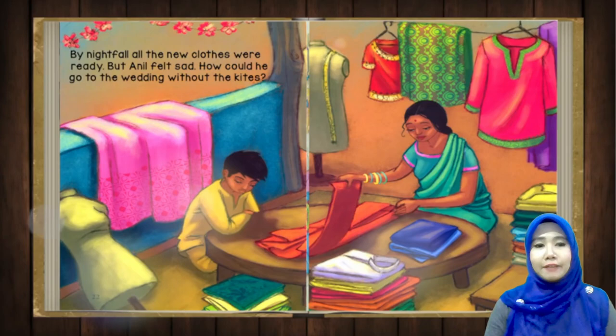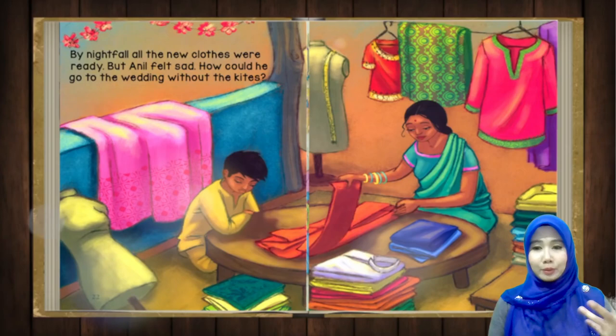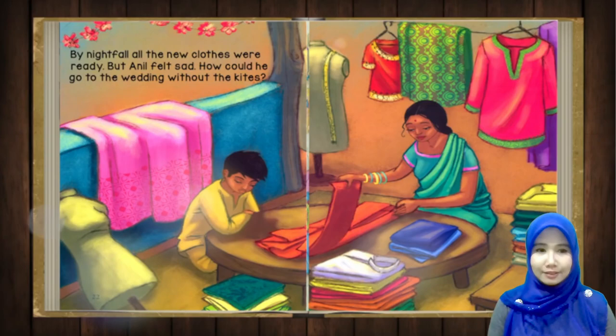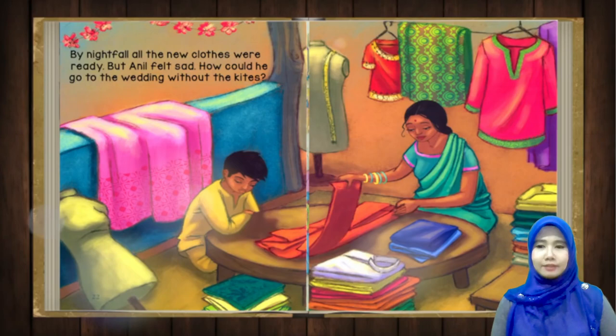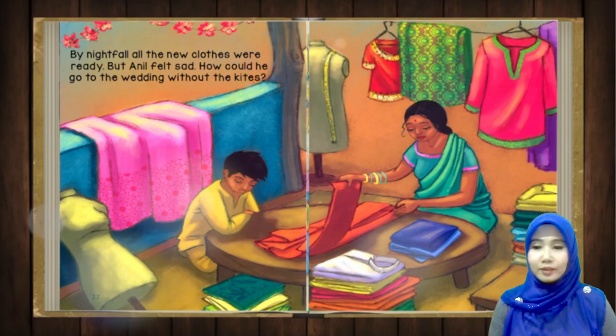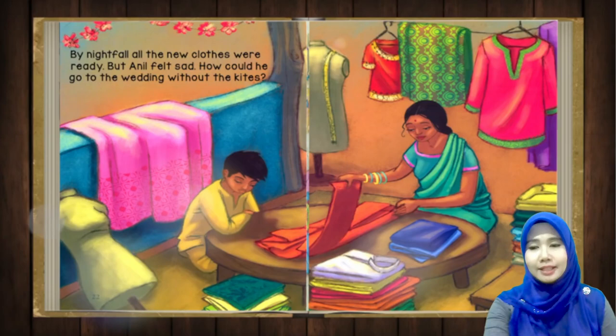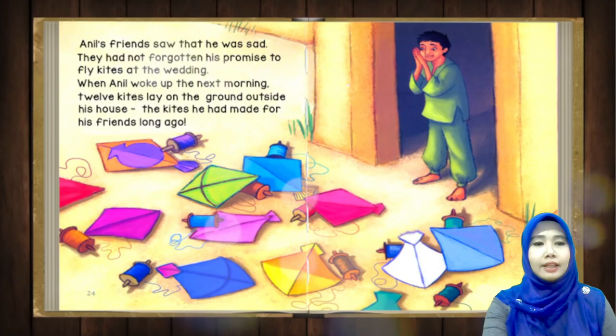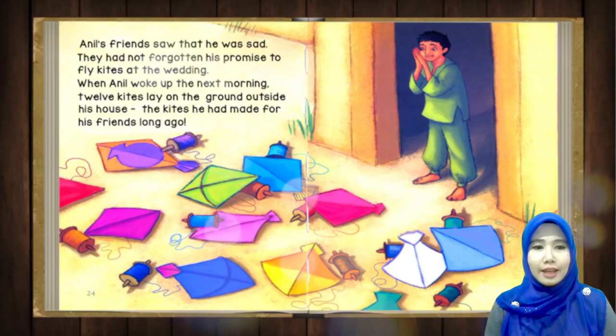By nightfall, all the new clothes were ready — pada waktu malam semua baju-baju baru tu dah sedia. But Anul felt sad — tapi Anul still sangat sedih. How could he go to the wedding without the kites? Macam mana dia nak pergi wedding tanpa layang-layang — without means tanpa. Anul's friends saw that he was sad — mereka semua tengok lah, sedih kawan ni.